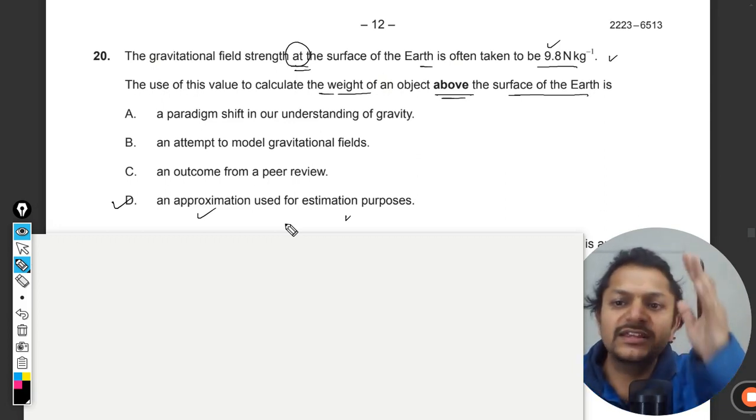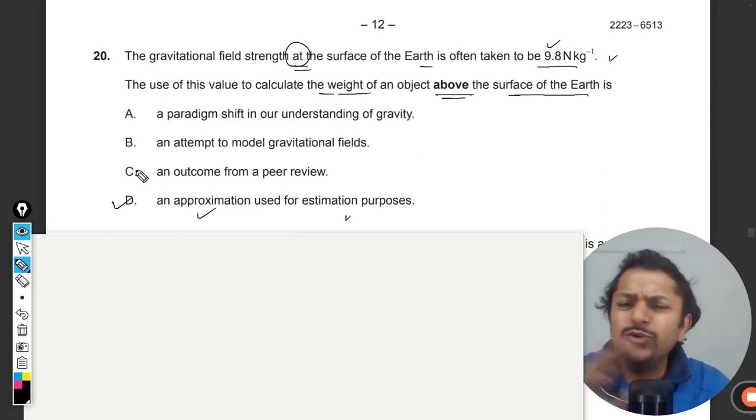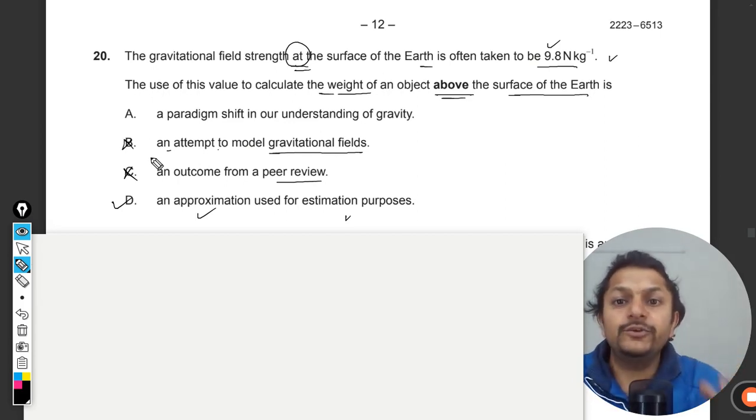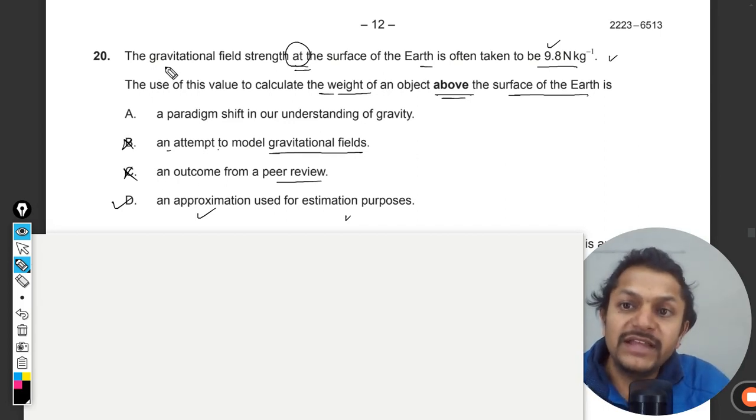So clearly in this case the answer will be D. A, B, C do not make any sense. They are really vague. Like the peer review, it has nothing to do with it. An attempt to model gravitational field—it has nothing to do with the weight. Yes, it could be an attempt to model the gravitational field, but that is what the gravitational field strength itself does.